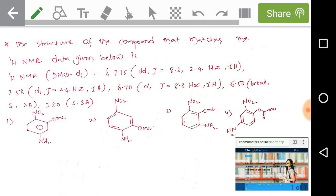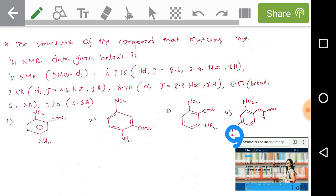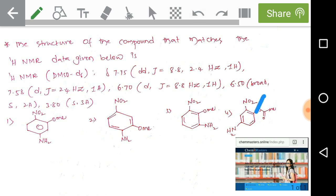For the fourth option, we consider the ester group. The lone pair of electrons on the oxygen of the ester may go onto the carbonyl carbon due to conjugation, and only partially go onto the ring to activate it. So the NH2 group is a stronger ring-activating group than the ester group. According to the strong ring-activating NH2 group, NO2 must be ortho or para to it — but in option 4, NO2 is ortho to the less activating group. That's why the fourth option is also wrong.